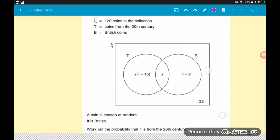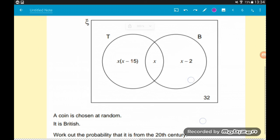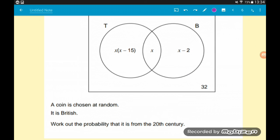So we've got a Venn diagram here with some lovely algebra. x times (x minus 15) coins are just from the 20th century, x are from the 20th century and British, and (x minus 2) coins are only British.